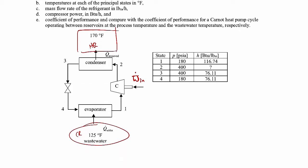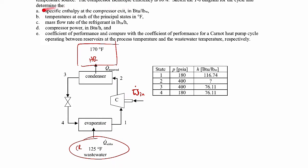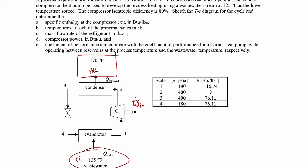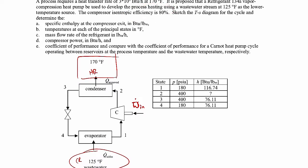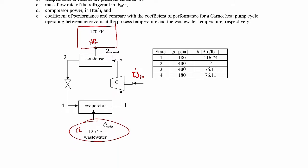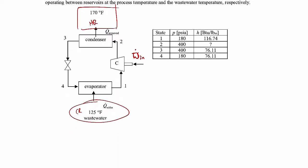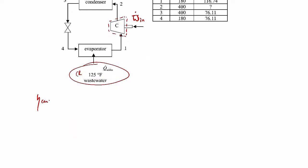Let's get started. For part A, to find the specific enthalpy at the compressor exit in BTUs per pound mass, we're told the compressor isentropic efficiency is 80 percent. We'll draw a control volume around the compressor and write the compressor isentropic efficiency.